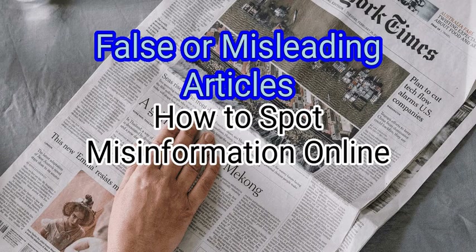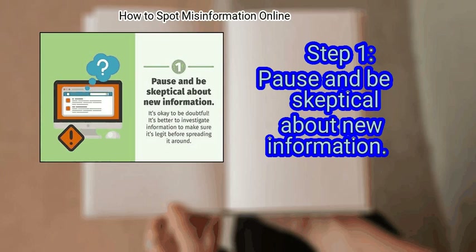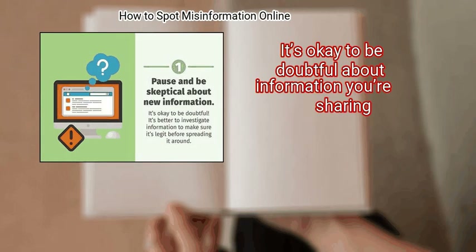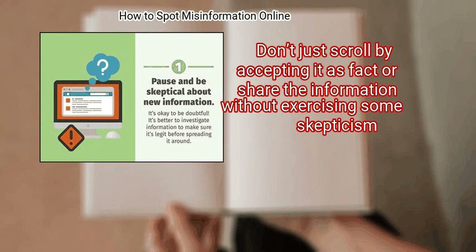Method 1: False or Misleading Articles. First, pause and be skeptical about new information. It's okay to be doubtful about information you are sharing. Don't just scroll by accepting it as fact or share the information without exercising some skepticism.